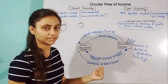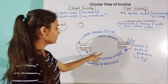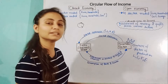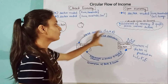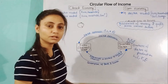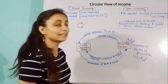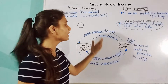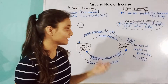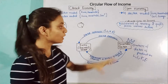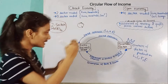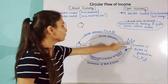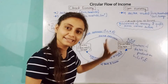When the business sector receives these factor services, it does not get them for free — it has to pay for them. These are called factor payments. For land, the payment is rent. For labor, wages. For capital, interest. And for entrepreneurship, profit. So whatever factor services the business sector takes, it provides corresponding factor payments back to the household sector.